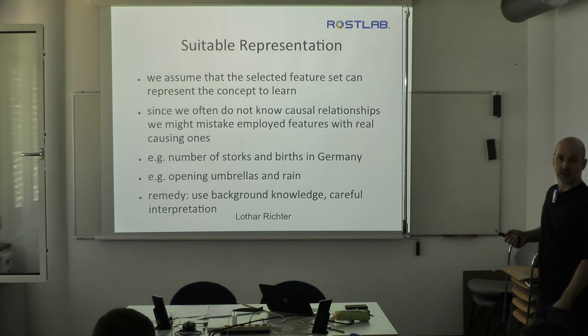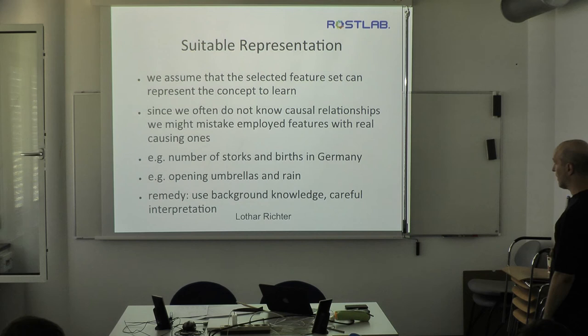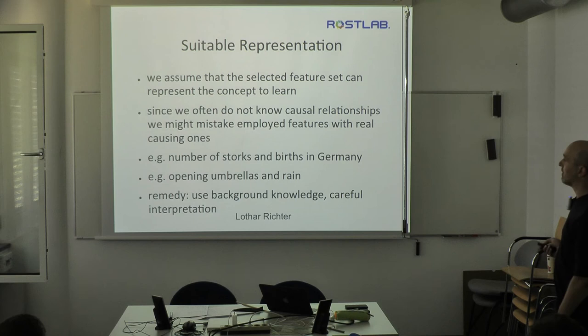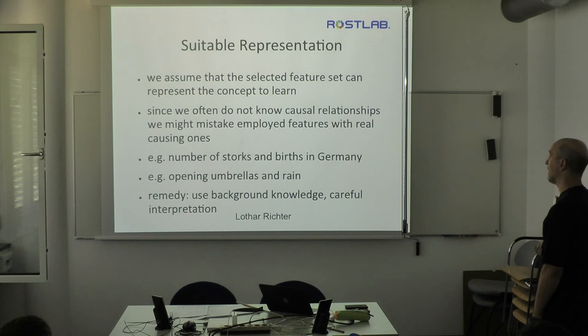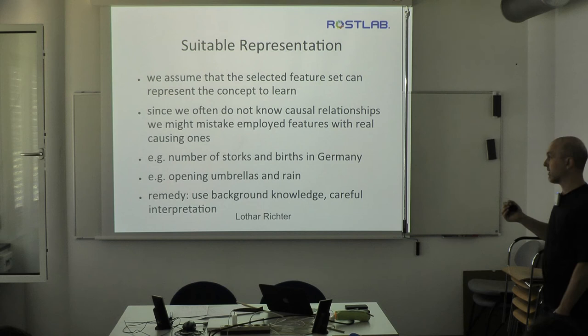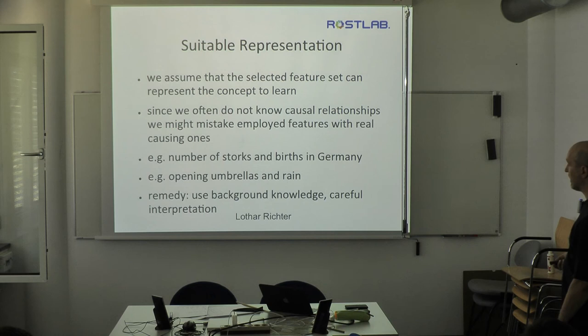Another assumption is suitable representation — we assume we have a feature set that can represent the concept we want to learn. We do not often know the causal relationships between features and the target label, and we can mistake correlated features for causal ones. For example, both the number of storks and the number of births in Germany decreased over the last decades — if you are not careful you might conclude that births depend on storks. Similarly, you might conclude that opening umbrellas causes rain — obviously we know better because of background knowledge, but such premature conclusions are quite subtle.